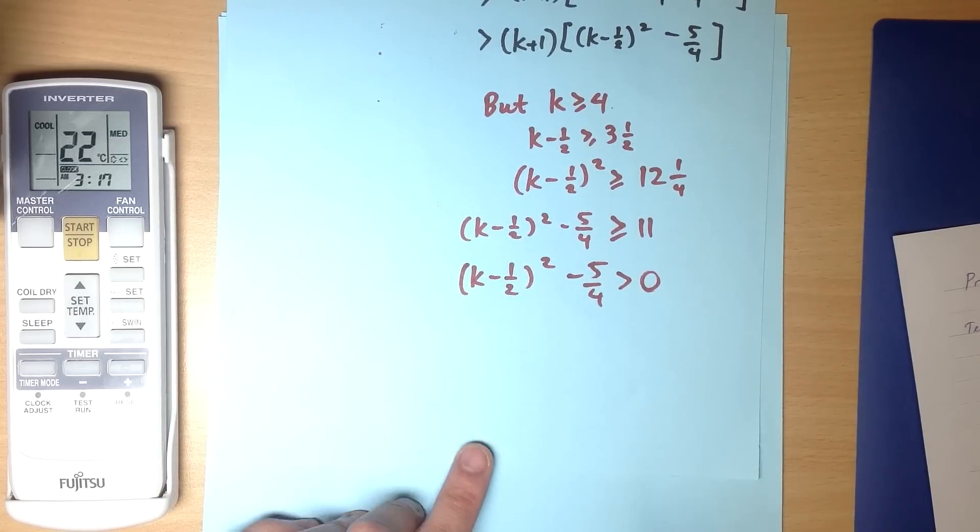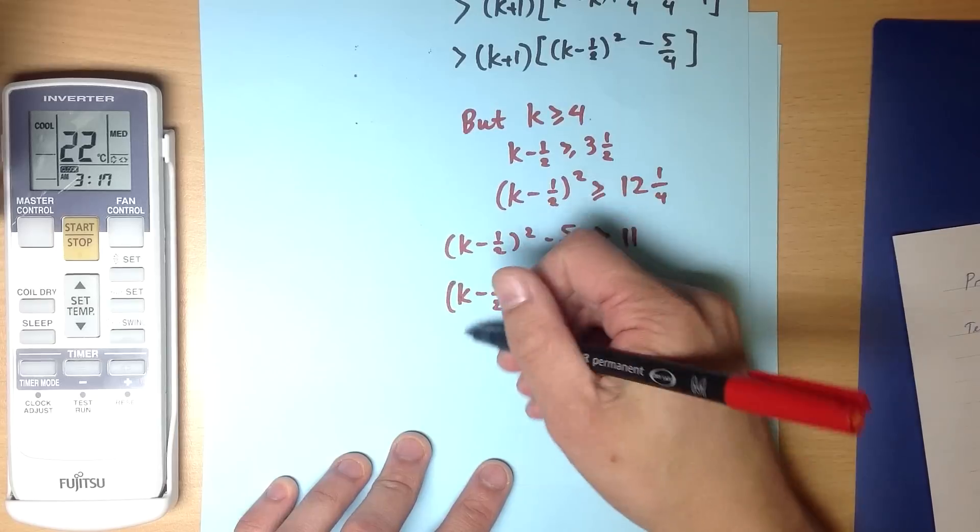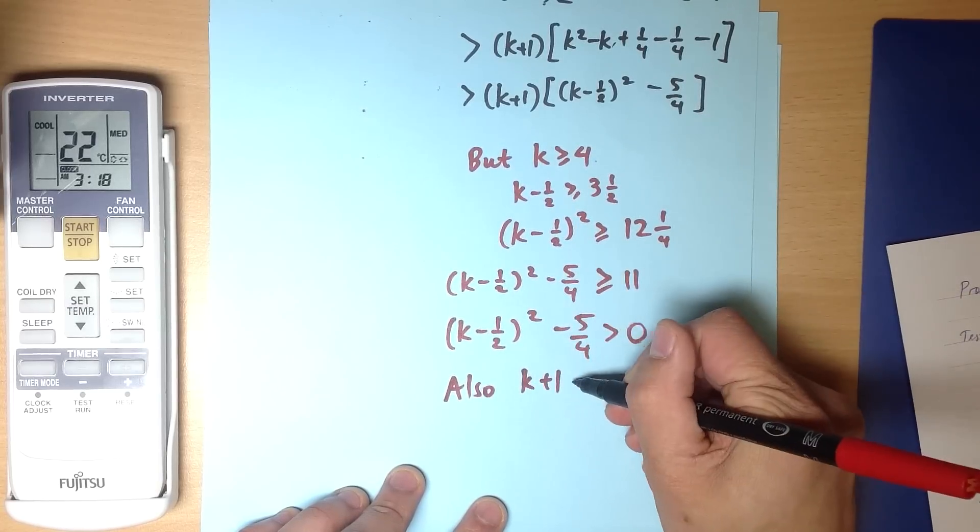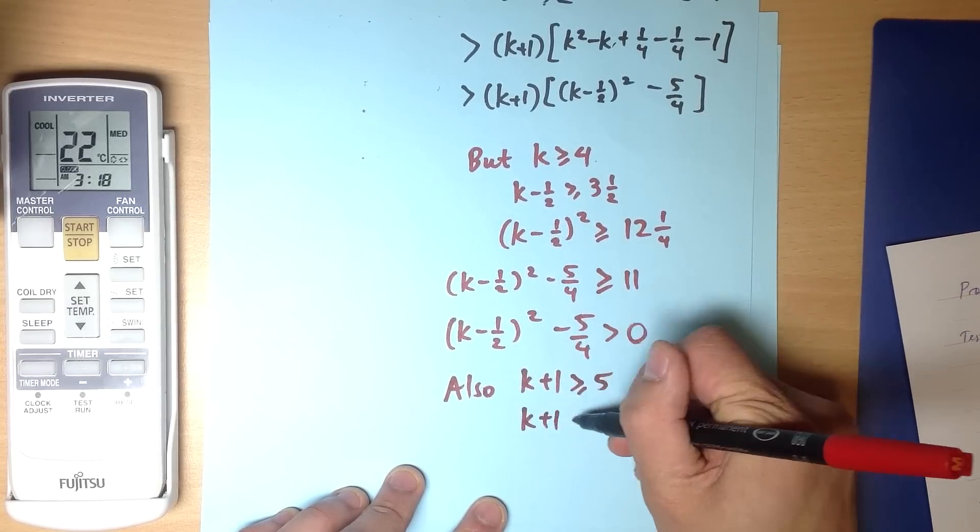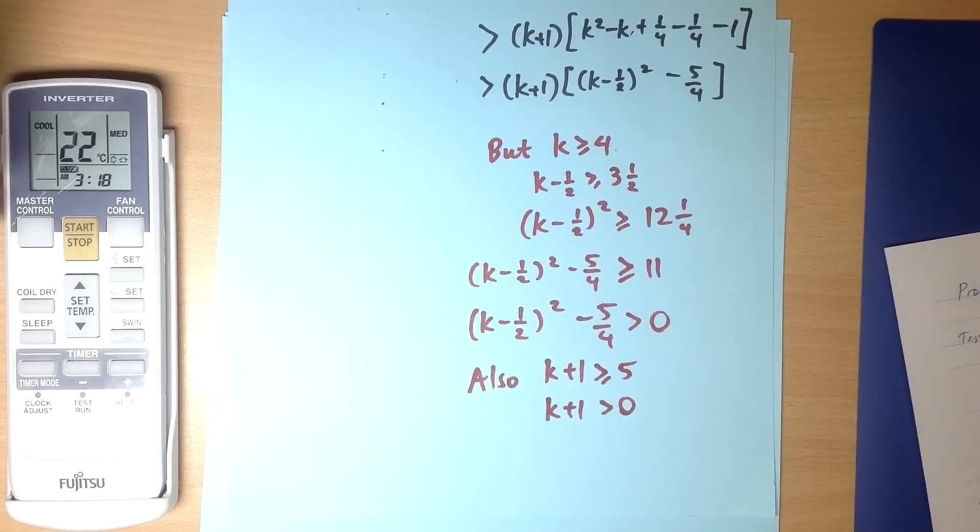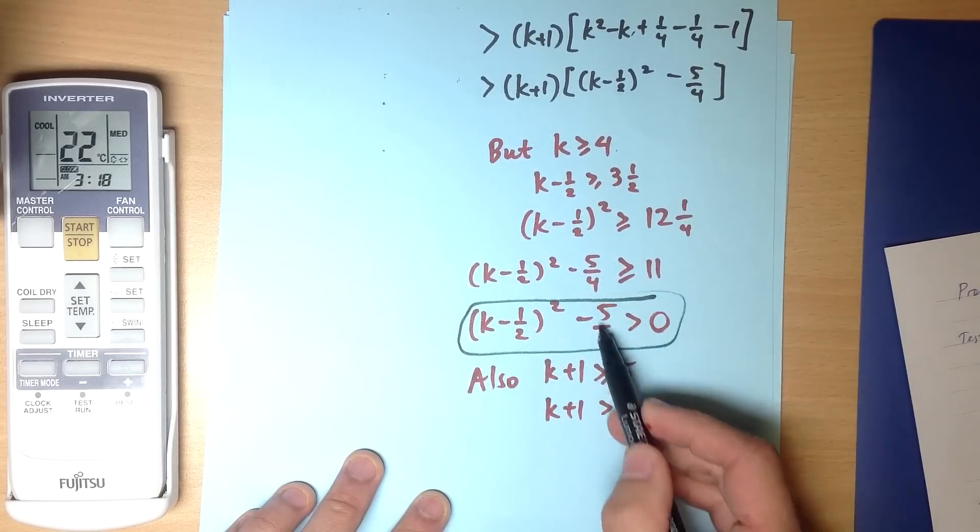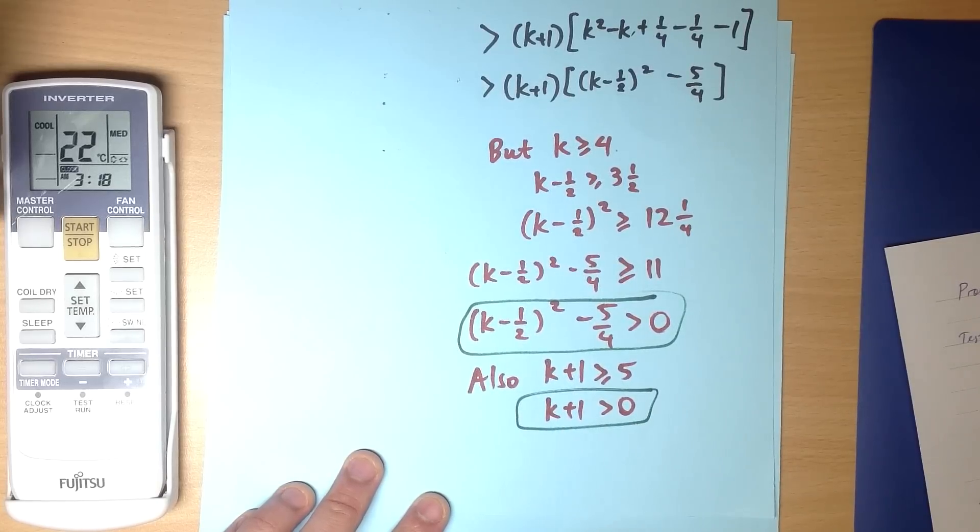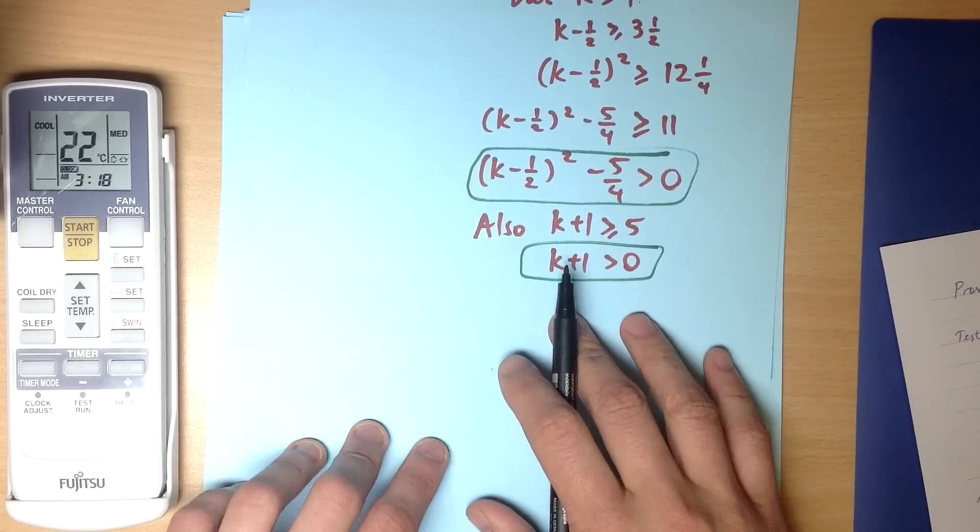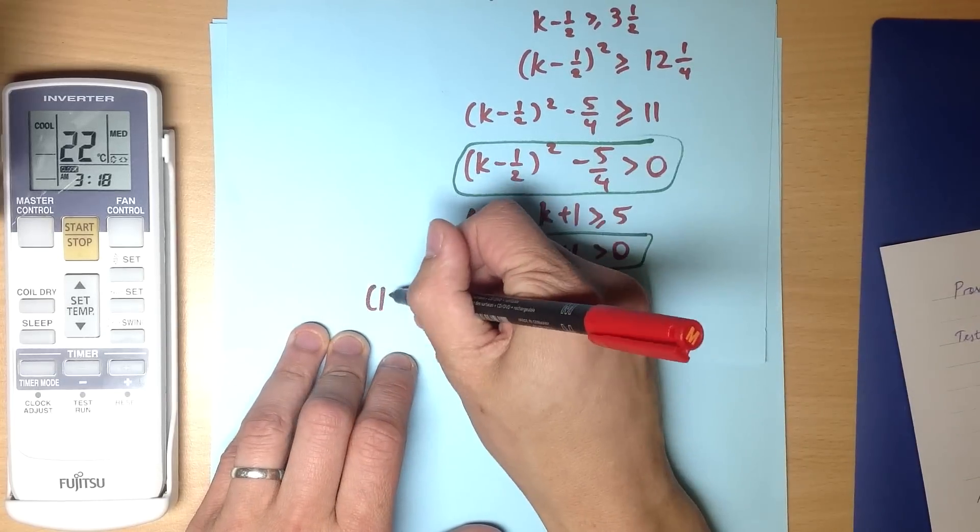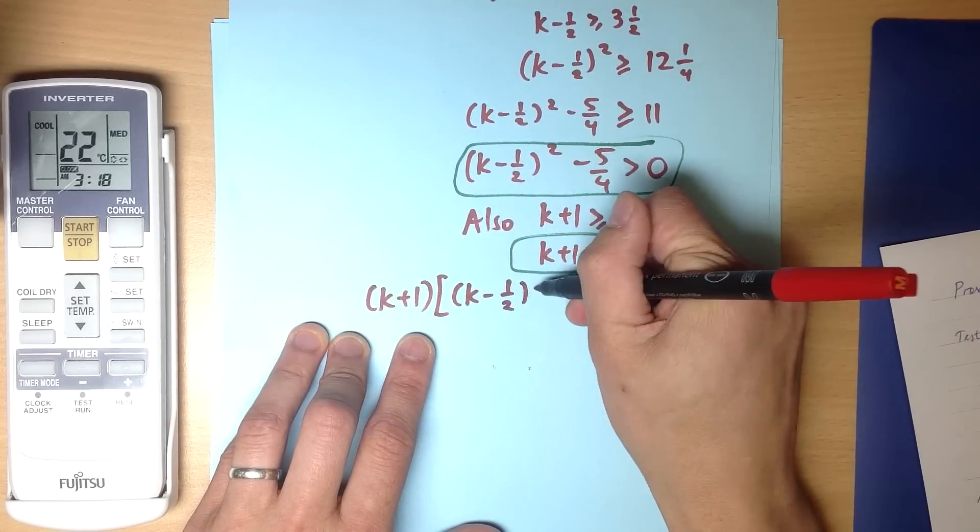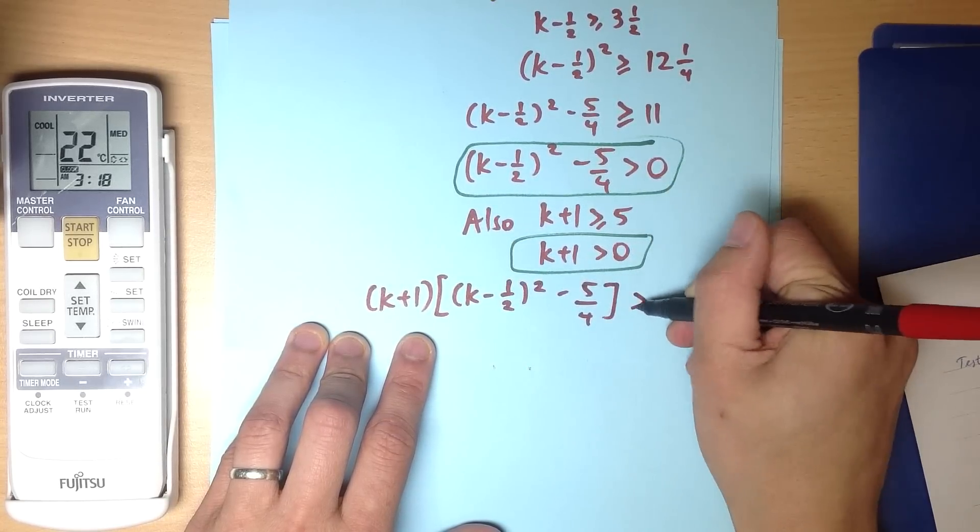Now did you see what that means? I can take this and I can also notice that because k is greater than or equal to 4, then k+1 is greater than or equal to 5, so k+1 is greater than 0. Now what have I got here? Take these two important lines here, this one and this one. If I've got those two, if I've got this being a positive number and this being a positive number, well I don't know how big they are, but if I multiply them together, then surely the product of two positive numbers is also positive.